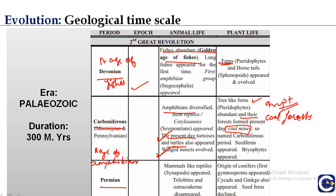The period is called Carboniferous because of the carbon-rich coal deposits from those forests. Seed ferns appeared, and after the tracheophytes and bryophytes, there was the origin of conifers — that is, gymnosperms — in the Permian period. The origin of conifers in the Permian period of the Paleozoic is an important fact.